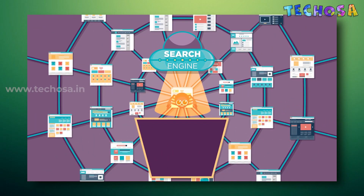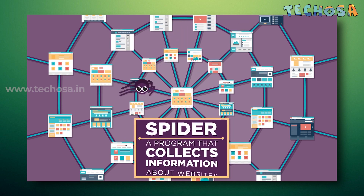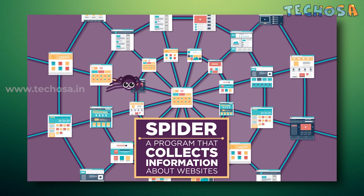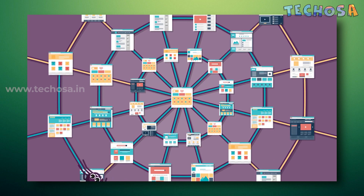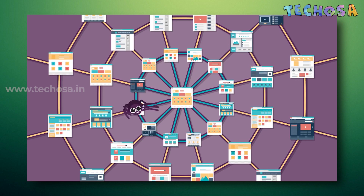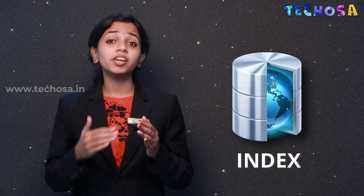Google constantly runs a program called a spider that crawls through these web pages to collect information about them. Each time it finds a hyperlink, it follows it until it has visited every page it can find on the entire internet. This is called crawling. For each page the spider visits, it stores any information that might be needed for a search by adding it into a special storage space called the index — and this is the library mentioned earlier.